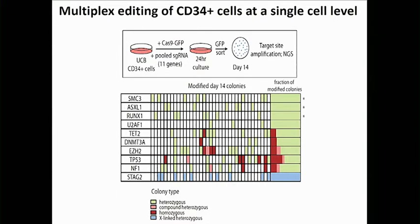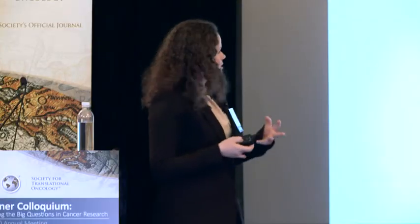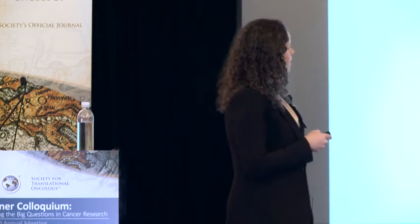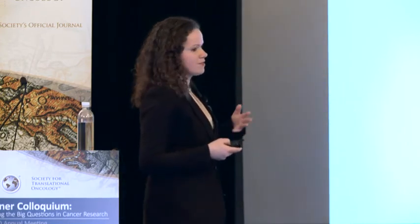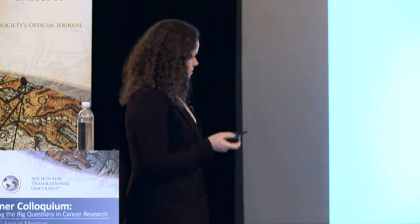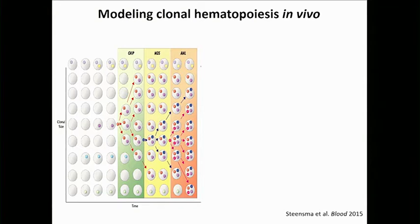Interestingly, it became quite clear that some genes — particularly SMC3, ASXL1, and RUNX1 — were always only targeted in a single allele, meaning they were heterozygous, as opposed to other genes like TET2, DNMT3A, EZH2, TP53, NF1, or STAG2, which were either compound heterozygous or homozygous. This very nicely correlates with patient data, where we never see mutation of more than a single allele of SMC3, ASXL1, and RUNX1. So this zygosity pattern from a 14-day methylcellulose culture really nicely represents the genetic data we see in patients.